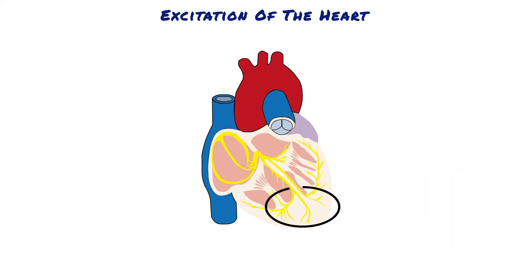Special Purkinje fibres lead from the AV node through the AV bundle into the ventricles. Except for the initial portion of these fibres where they penetrate the AV fibrous barrier, they have functional characteristics quite the opposite of those of the AV nodal fibres. They are very large fibres and transmit action potentials at a velocity of 1.5 to 4.0 metres per second — about 6 times that in usual ventricular muscle and 150 times that in some of the AV nodal fibres — allowing almost instantaneous transmission of the cardiac impulse throughout the entire ventricular muscle.